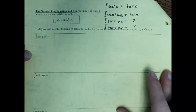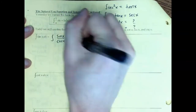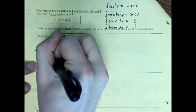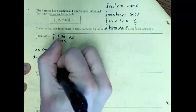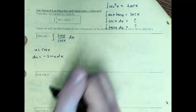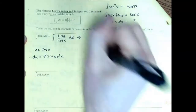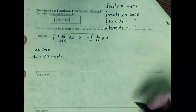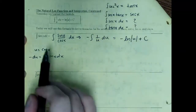To integrate tangent, first rewrite it in terms of sine and cosine — tangent is sine over cosine. Once split into sine over cosine, we can do u-substitution, setting u equal to the denominator, cosine. The derivative of cosine is negative sine, so it's off by a negative. With the u-sub, we end up with negative integral of 1/u, which is negative ln|u|. So the integration of tangent is negative ln|cos x|.